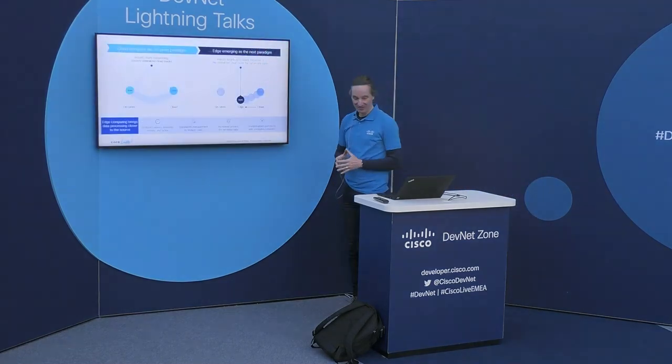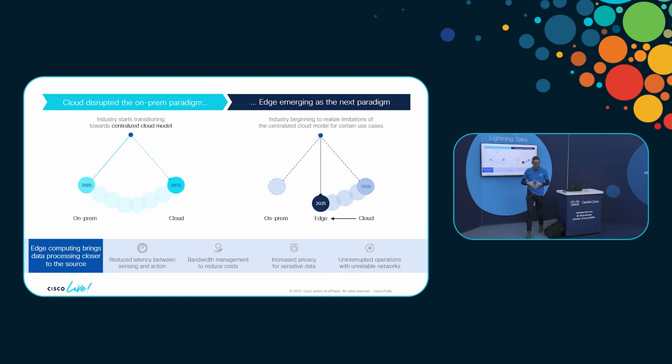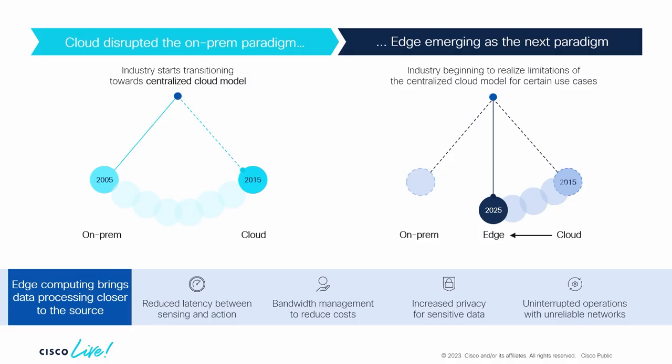Let's jump right into it. Back in 2010, all our compute was on-prem. Everything was running on-prem because there was no cloud. Then the cloud appeared and people swiftly moved all their workloads to the cloud, only to find out that for certain things it's not so great if there is 200 milliseconds between you and the application.